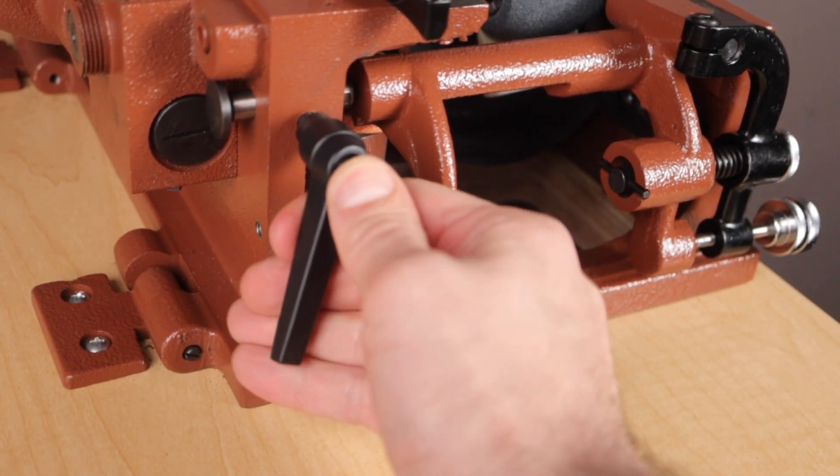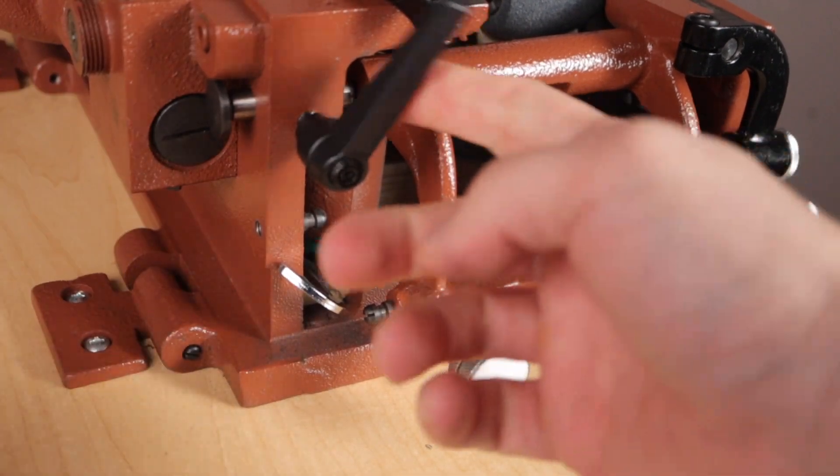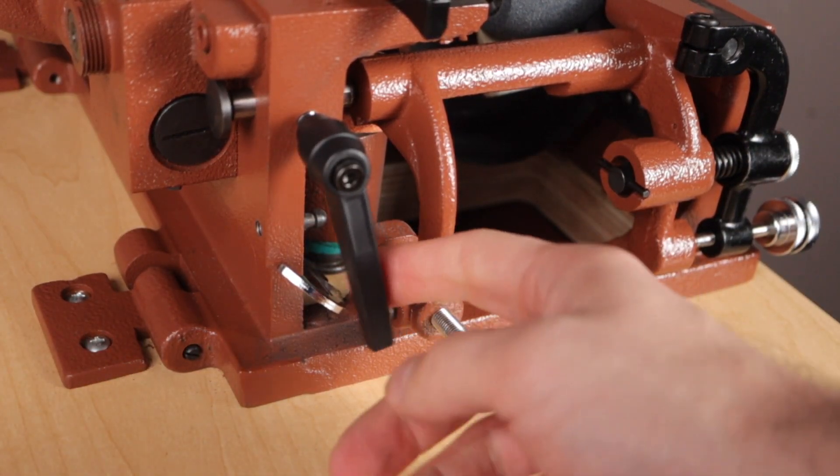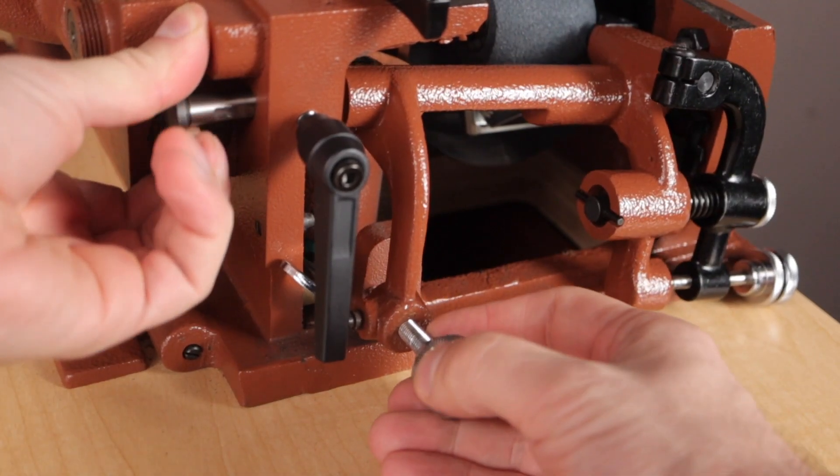Loosen the black handle center pin screw and then pull the roller bracket center arm pin. Now remove the entire roller bracket arm carefully.